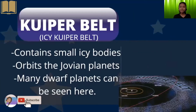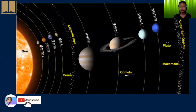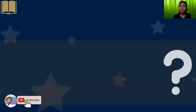Next, we have the Kuiper Belt, also known as the Icy Kuiper Belt. This contains small icy objects which orbit around the Jovian planets. As we can see in the picture, there are many dwarf planets that can be seen here, and the Kuiper Belt is at the rightmost part of this picture.